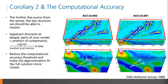At depth, where the signal-to-numerical-noise ratio is low, the artifacts due to the approximation are evident. Closer to the surface, where the signal-to-numerical-noise ratio is higher, the noise is unseen. Reducing the computational accuracy threshold by a factor of 2 results in a model that is expectedly smoother at depth, yet is unchanged near the surface.